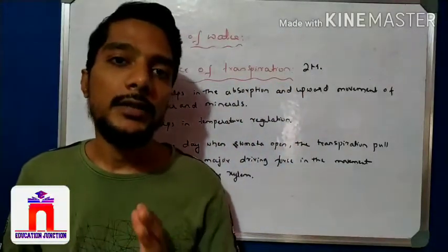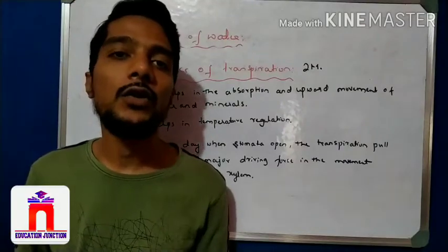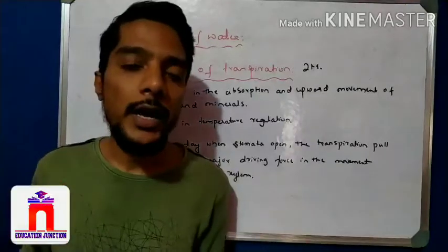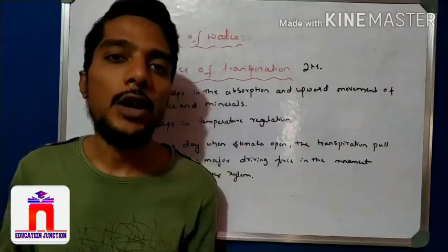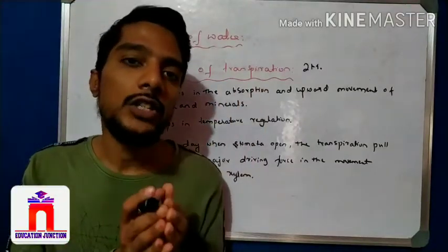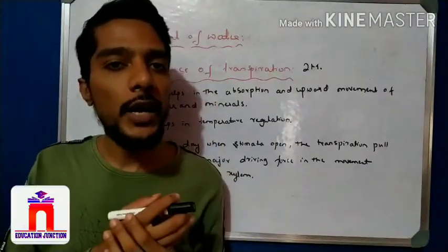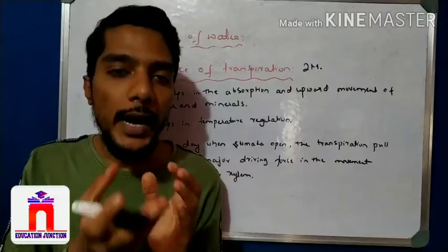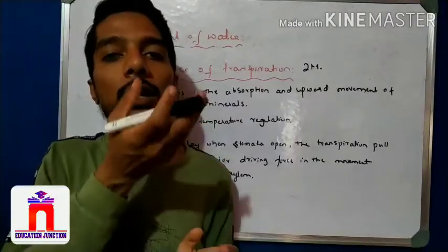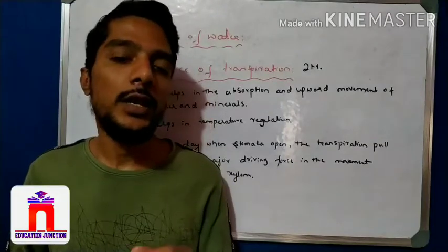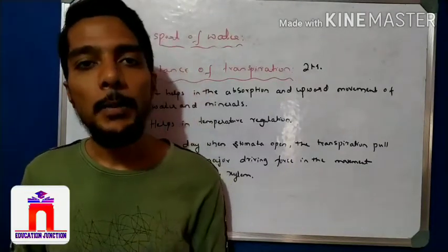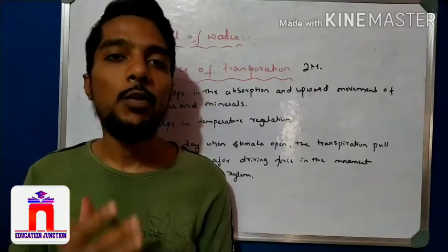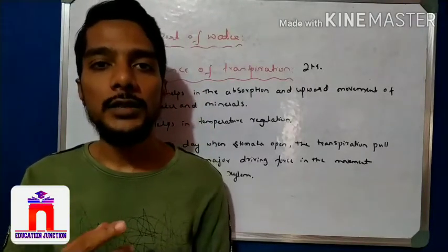So the three importances of transpiration are: one — it creates upward movement; two — it creates temperature regulation; three — open stomata during daytime makes for major transportation of water. Here we complete the xylem, that is transportation of water through xylem. We learned about how xylem creates a network and transfers water to all parts of the body, and how two upward forces move the water.